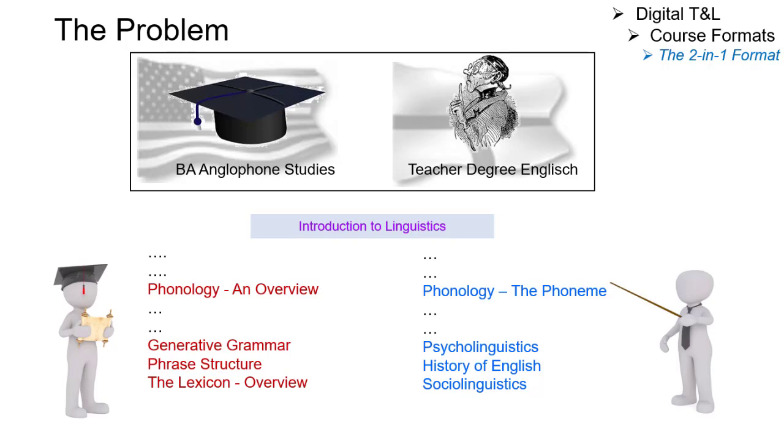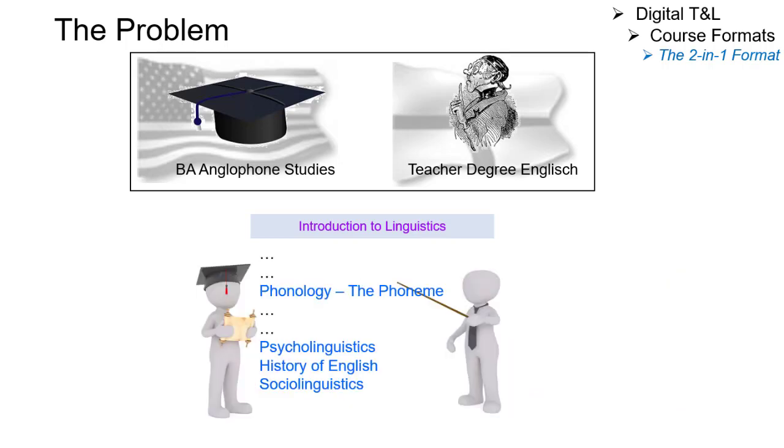But what do most universities do? Due to limited teaching capacities, they offer only one of the two introductory courses without any target group differentiation.